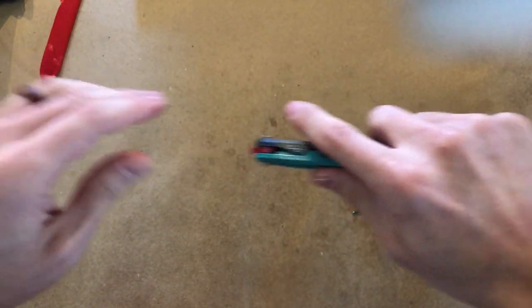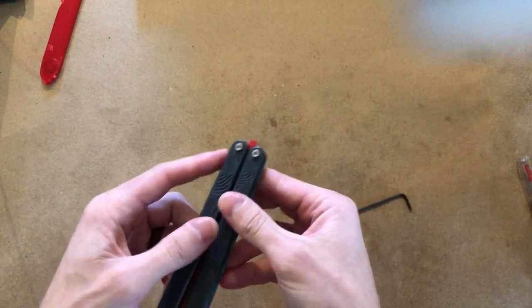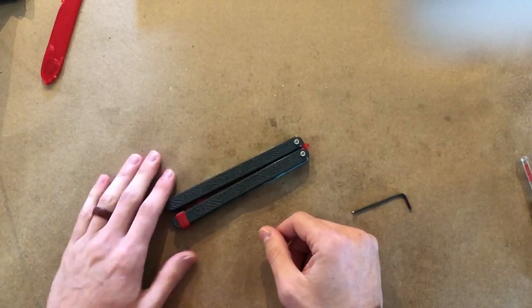So you just learned how to change the weights, disassemble, change out the blade, lubricate the bearings and reassemble if you need to, and then tune your Zippy Cycloid. Thanks for watching.